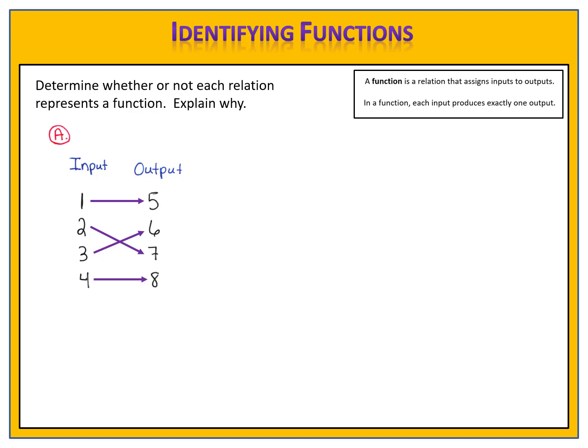We have to ask ourselves whether each input produces only one output. In this case it is. When I input a 1, I get a 5 every time. Input a 2, I get a 7 every time. Input a 3, I get a 6 every time. Input a 4, I get an 8 every time. This relation is a function, because each input produces exactly one output.